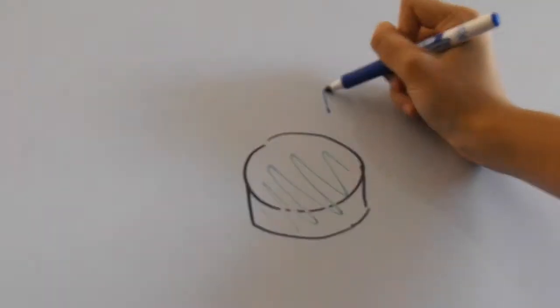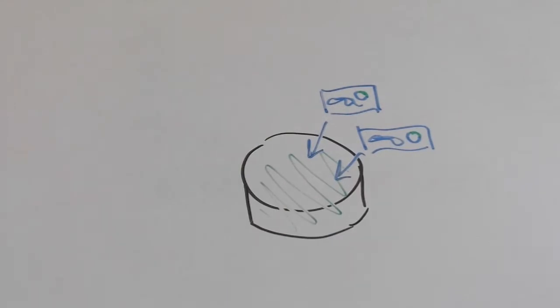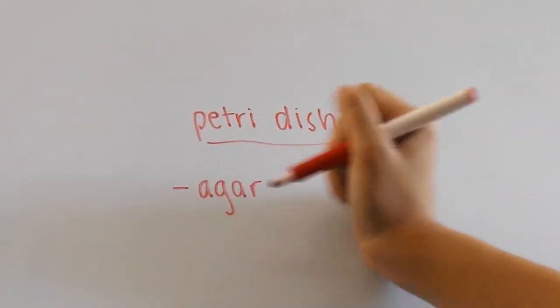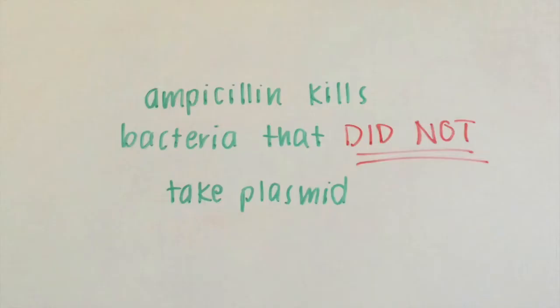The way that we will know if they took up the plasmids or not is to put them on a petri dish with agar, which is basically the nutrients for the bacteria, and ampicillin. The ampicillin will kill the bacteria that haven't taken up the plasmid. The bacteria that we know have successfully taken up the plasmid can then be used for further scientific research.